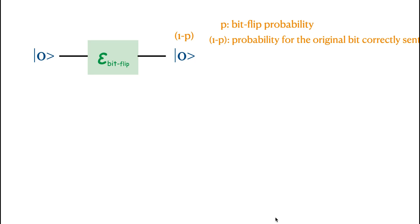There's a chance that the error caused the bitflip and the probability for the bitflipping is p. So at the output, the probability of the state that remains the same as the input is 1-p.